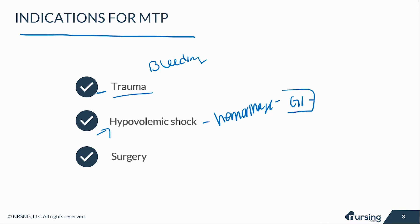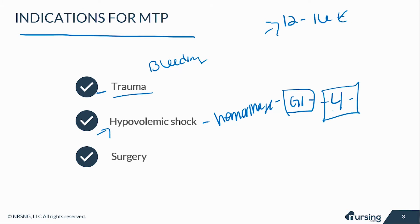I recently had a patient that came in with a pretty significant GI bleed and her hemoglobin was four. Remember that normal hemoglobins are usually between 12 and 16 — these can vary depending on the source and whether it's a male or female, but that's a pretty average number. Her organs were not getting the perfusion they needed. She had altered LOC and was in hypovolemic shock because she was bleeding. We needed to get as much blood in her as possible; she was kind of hemodynamically stable.